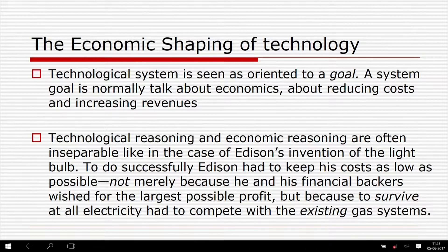In the evolution of technology, economics is deeply embedded — economic goals are deeply embedded. As Hughes pointed out, the technological system is seen as oriented to a goal, to an objective, to an aim. It must aim towards certain social needs or economic needs, or by keeping the market in mind. Otherwise, any metaphor of advancing or backward parts becomes meaningless. Language of this kind is dangerous if it is allowed to slip towards vague talk of the cultural need for a technology.